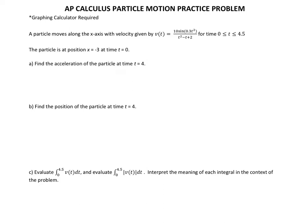So let's take a look at the problem. It says a particle moves along the x-axis with velocity given by v(t) = 10 sin(0.3t²) / (t² - t + 2) for the time interval where t is between 0 and 4.5.